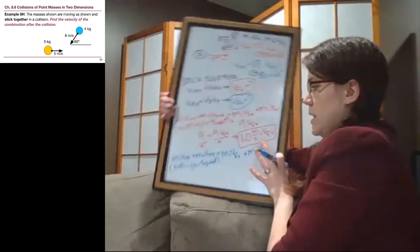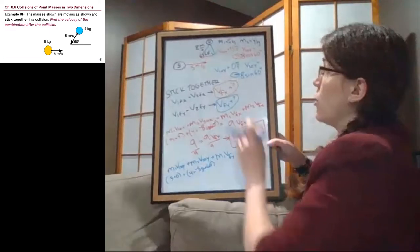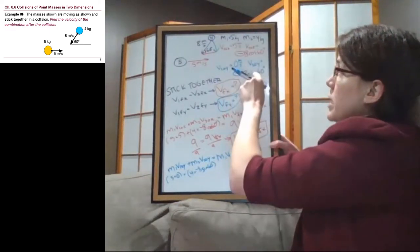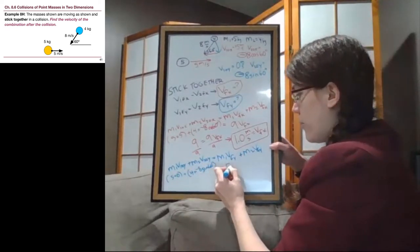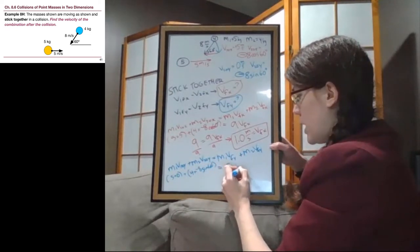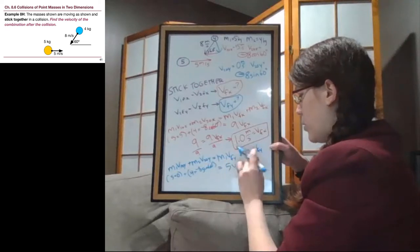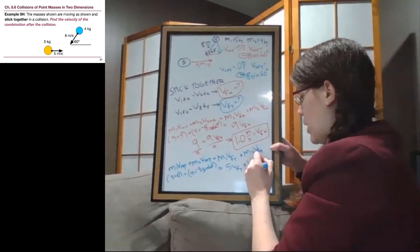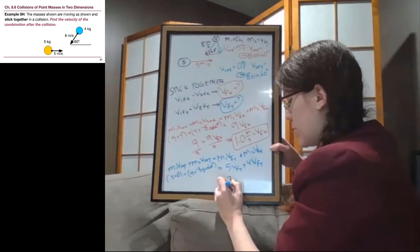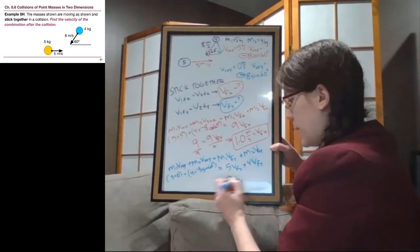I'll make sure we can see it. Okay, so 5 times 0, 4 times negative 8 sine 60 degrees. And then on the right side, we have 5 v final y plus 4 v final y. V final y. So on the right side, we're going to have 9 v final y.